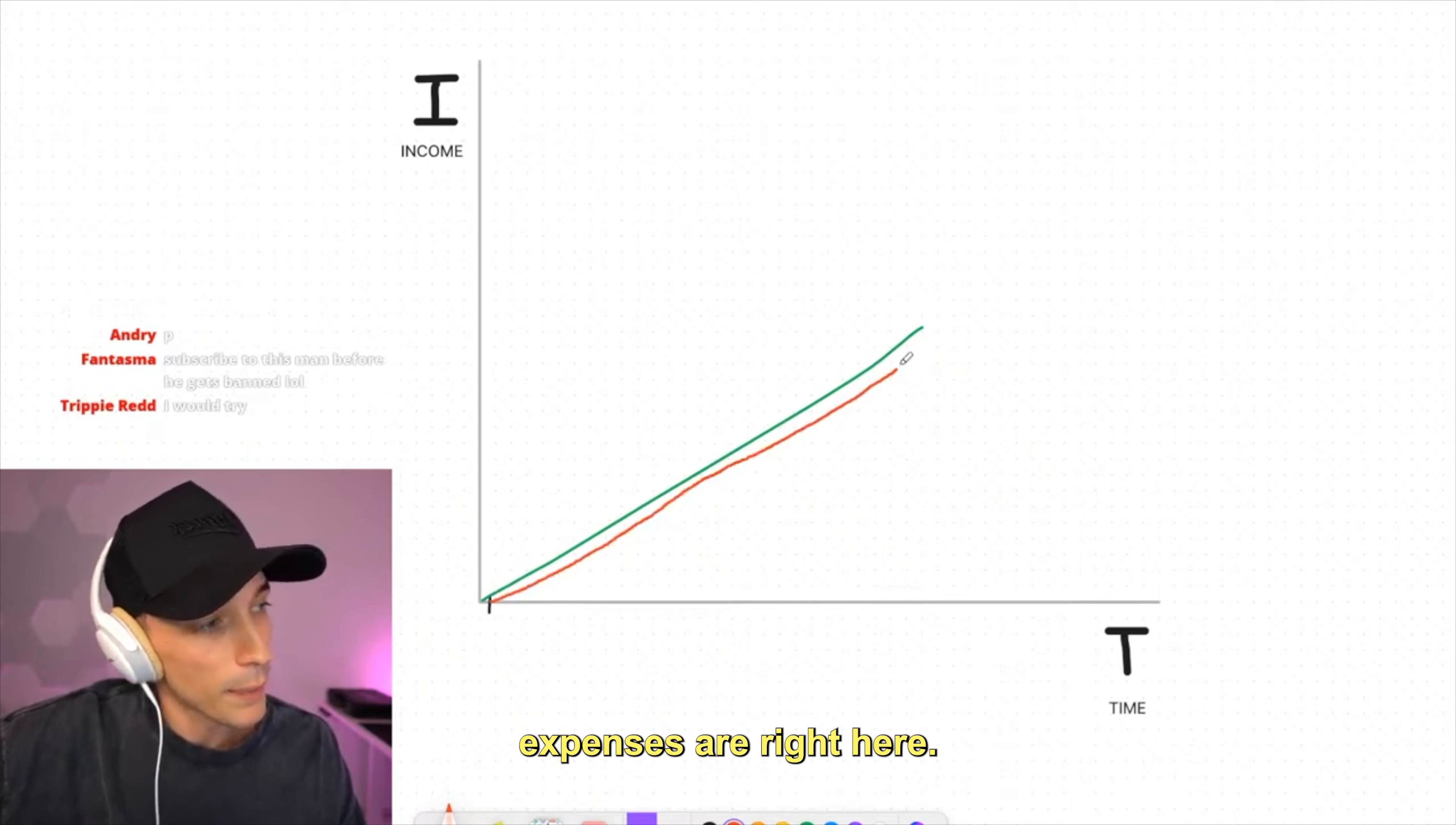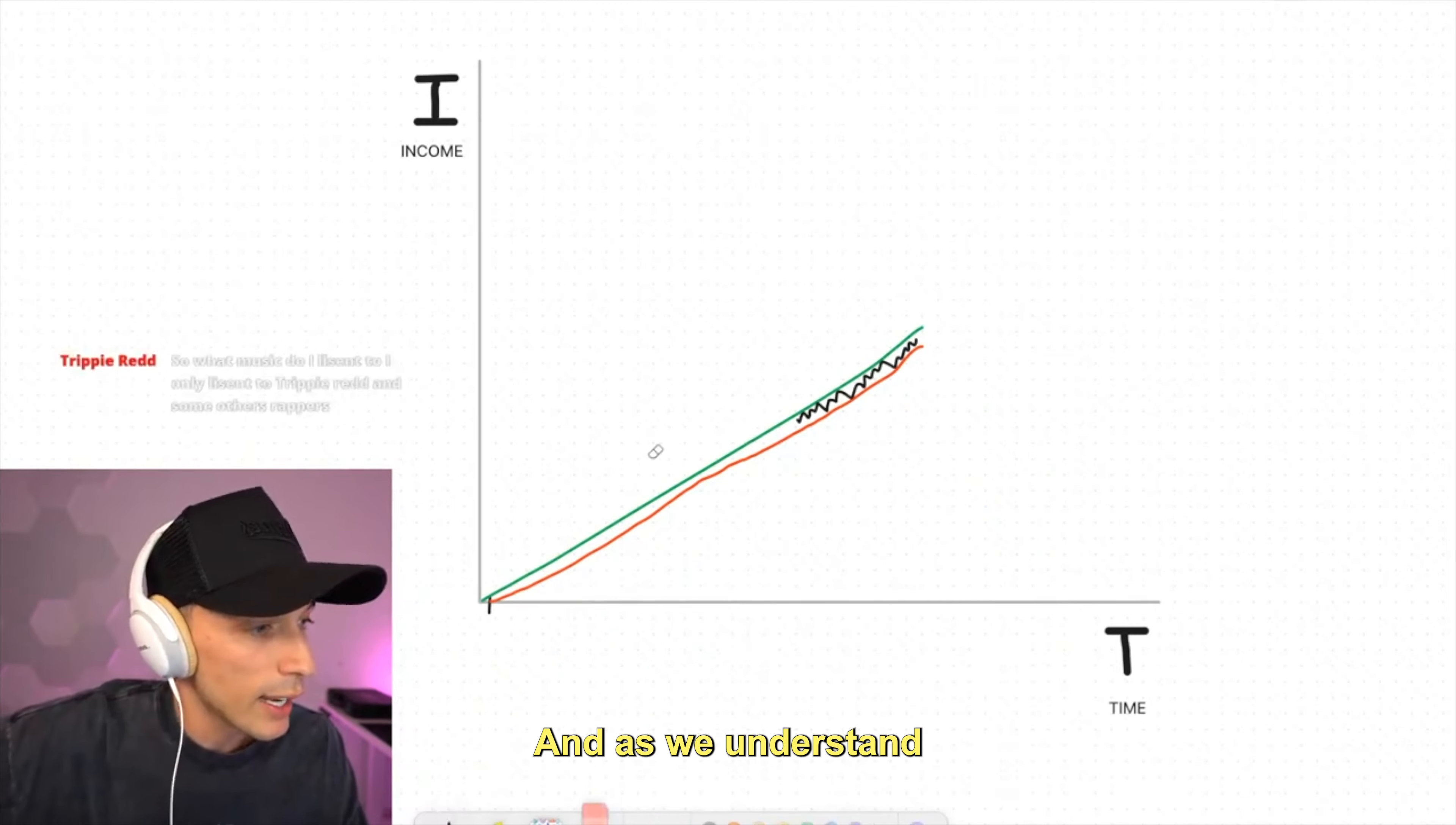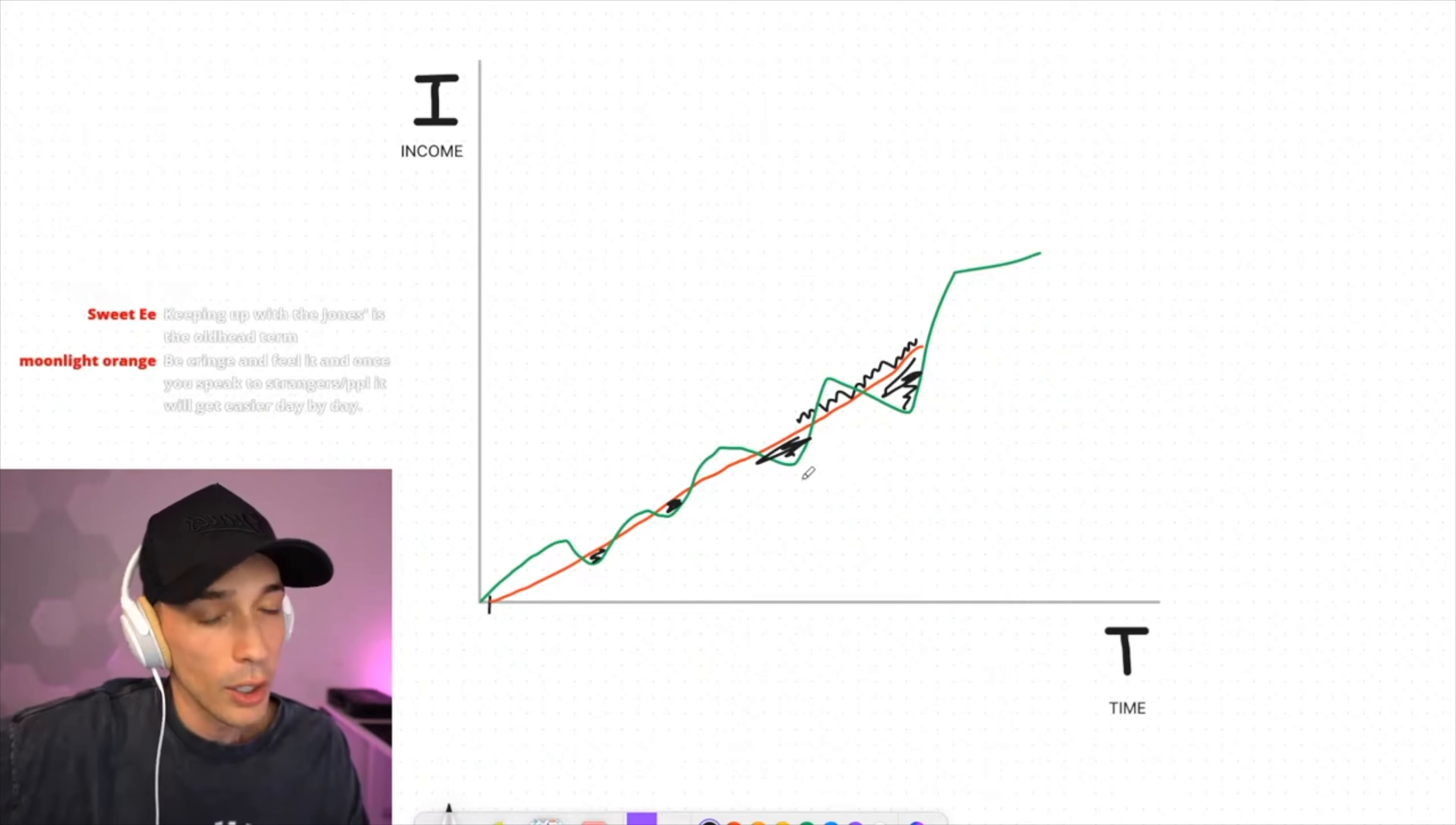Usually what people are trying to do is they're trying to showcase to the world their income level. So as your income grows, you want to portray that growth in a way that people validate you. This is normal behavior, but it's not good behavior. The average motherfucker who's a loser, their expenses are right here. So what does that mean? That means that you have a slight room for error and a slight room for saving money. Look at how much room you have for error. You have very little room for error.